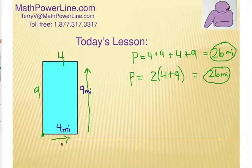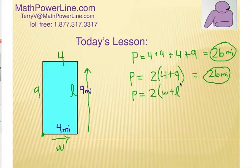Alright. Now, let's kind of put this in algebraic terms as a formula. Let's say that this is the width. Four is the width and let's say the nine is the length. Width and length. So, putting it in formula form, we could say perimeter is two times the width plus the length. Okay? That's one way to do the perimeter.